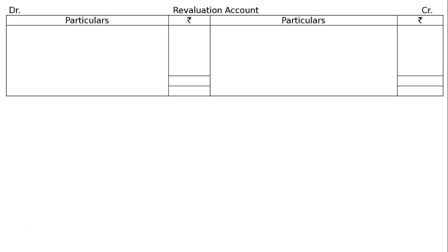The format of a revaluation account is given with debit, credit, particulars, and rupee symbols on both sides. And to workmen compensation liability, Rs. 10,000 is given.